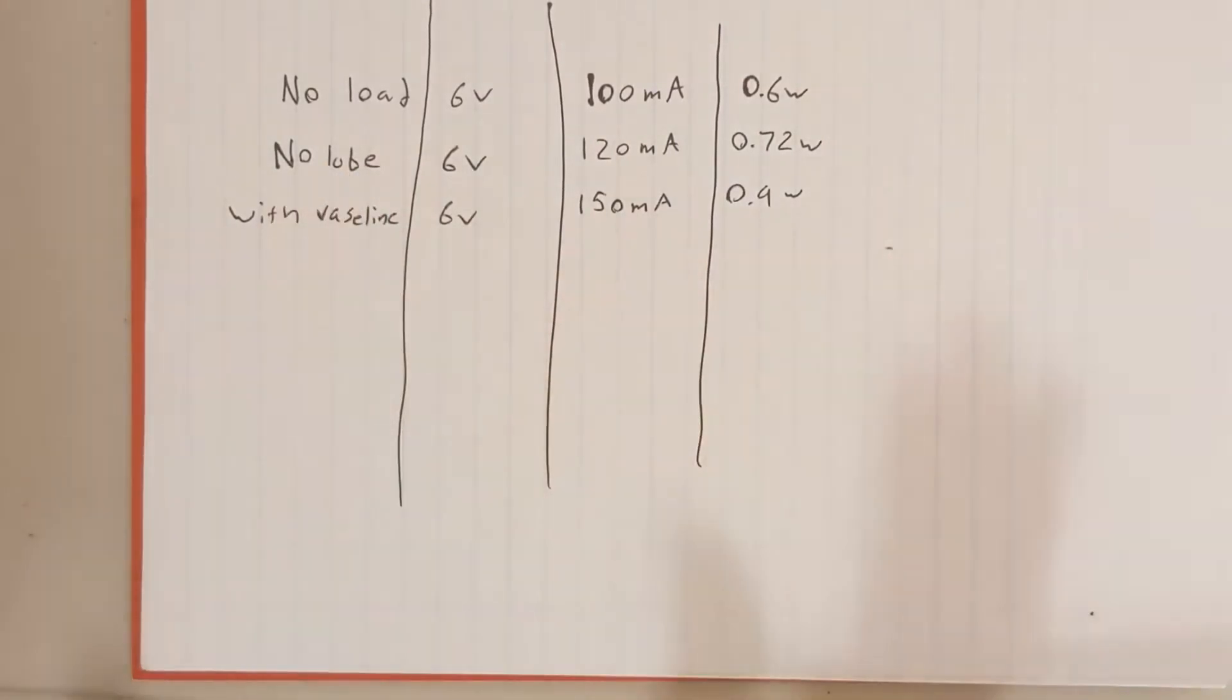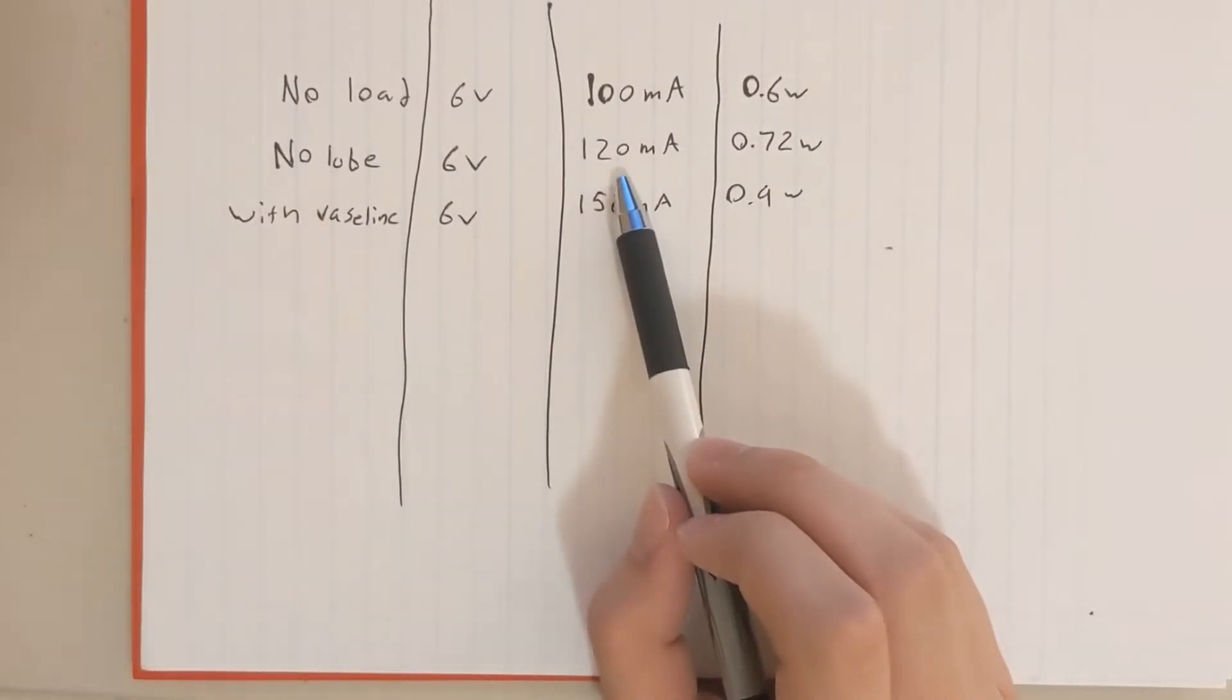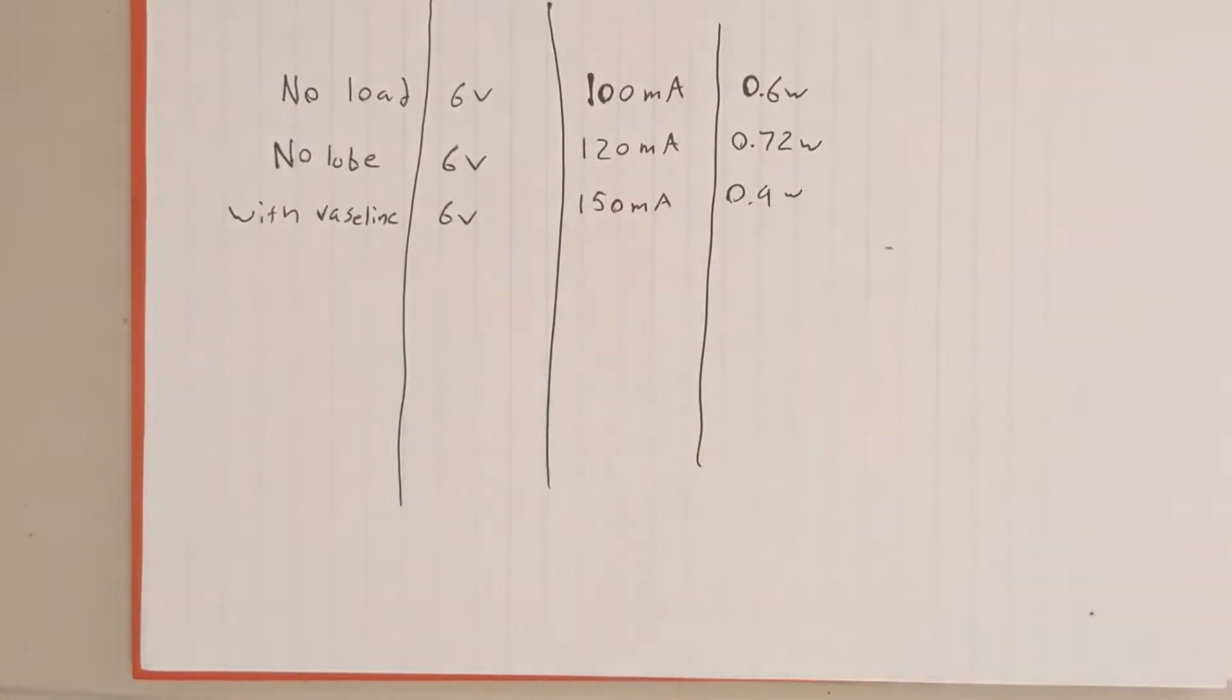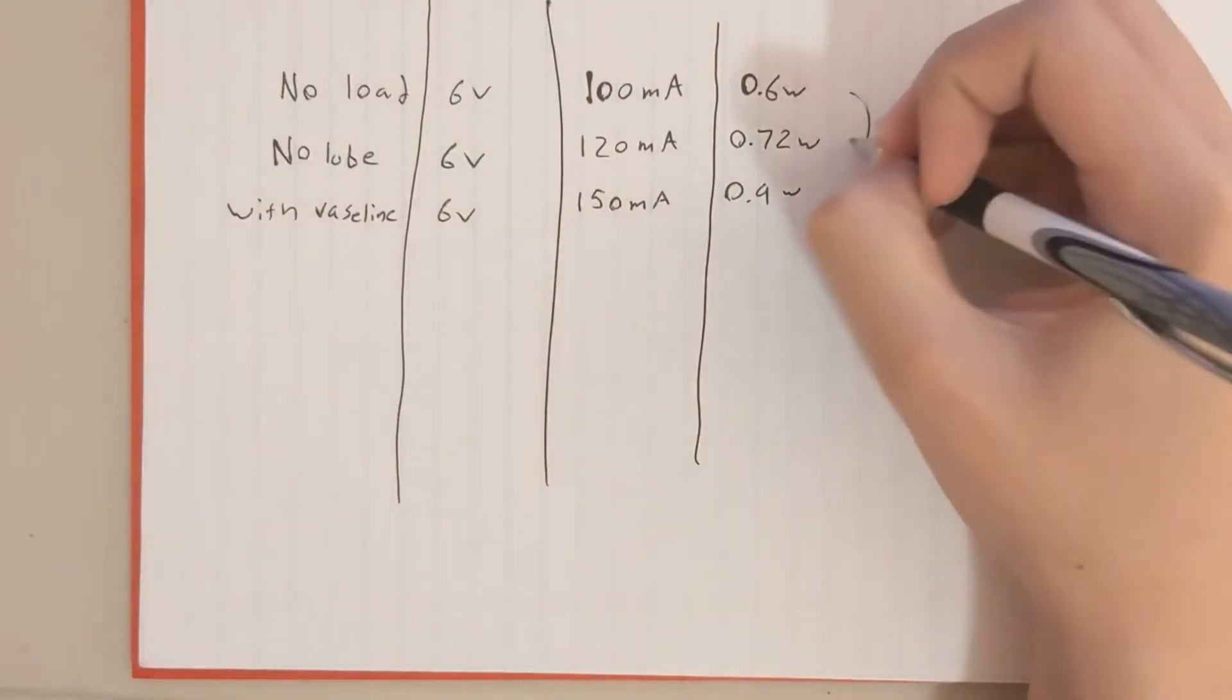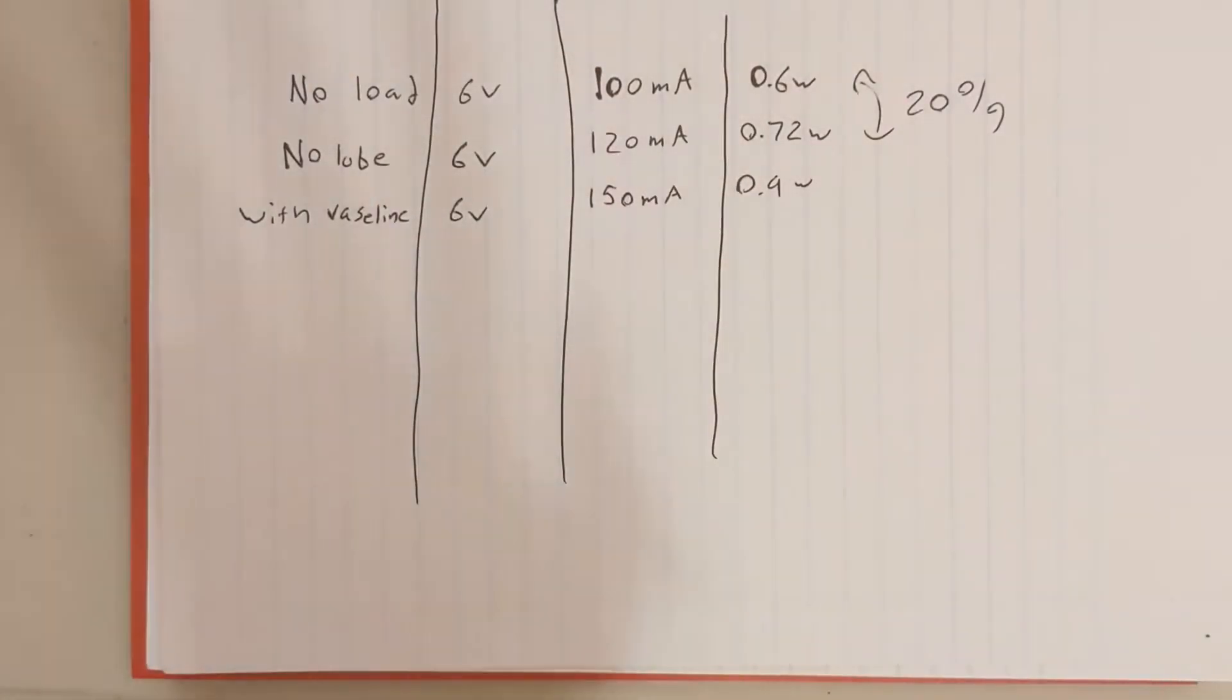So with no lubrication, so no Vaseline, at 6 volts we are drawing 120mA and that equals to 0.72 watts. This is an increase of about 20%. So, that's actually quite expected, it takes some power off your system. So, yeah, that's okay, I guess.